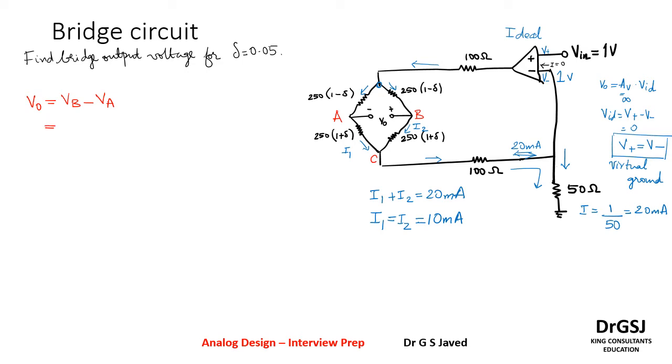Now these can be further divided. If you can take a common point with respect to integer, this can now be written as the value of V_naught is given as V_BC minus V_AC with reference to the common node. Now what is V_BC? V_BC is the voltage drop across this resistor. V_AC is the voltage drop across this resistor. So we can find that V_BC is 250 into (1 plus delta) times i2, times 10 milliampere, minus...